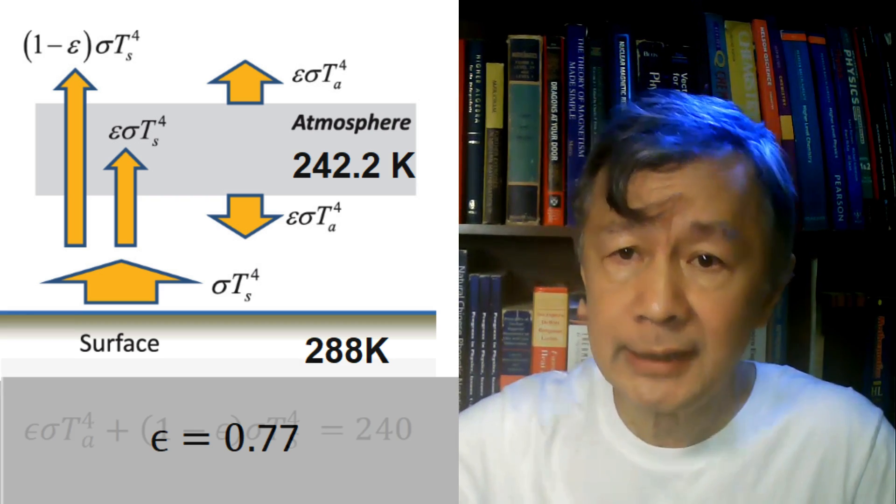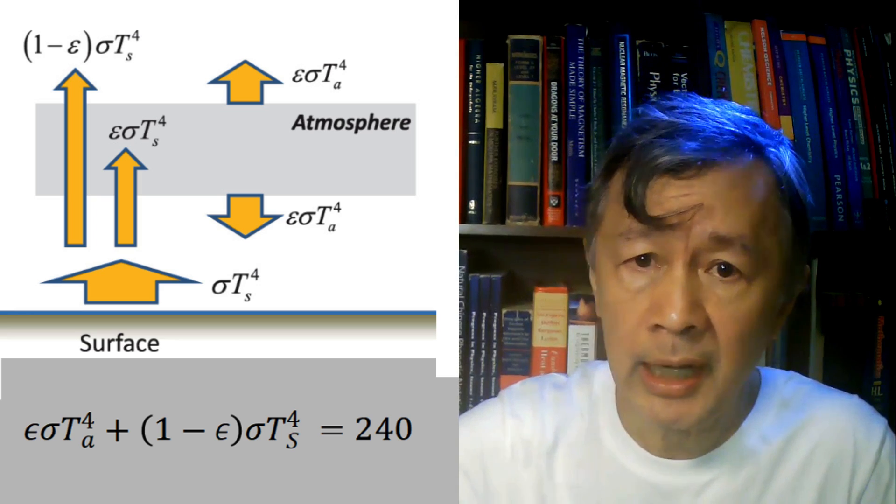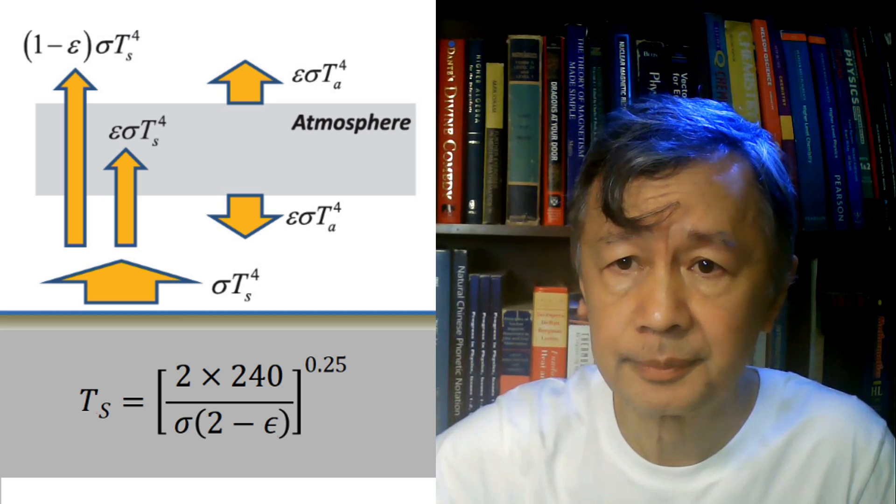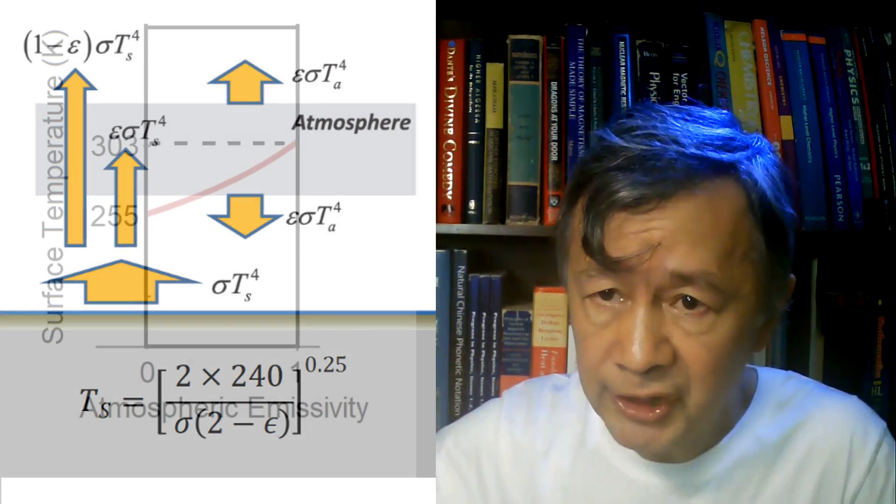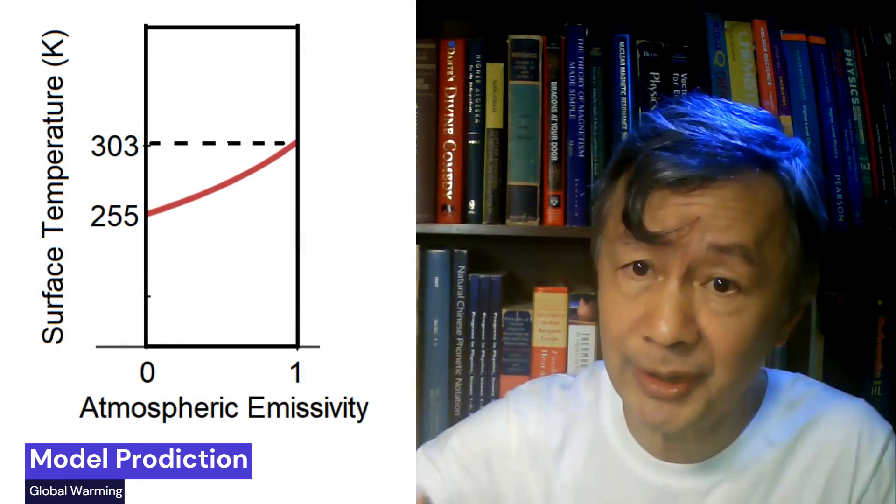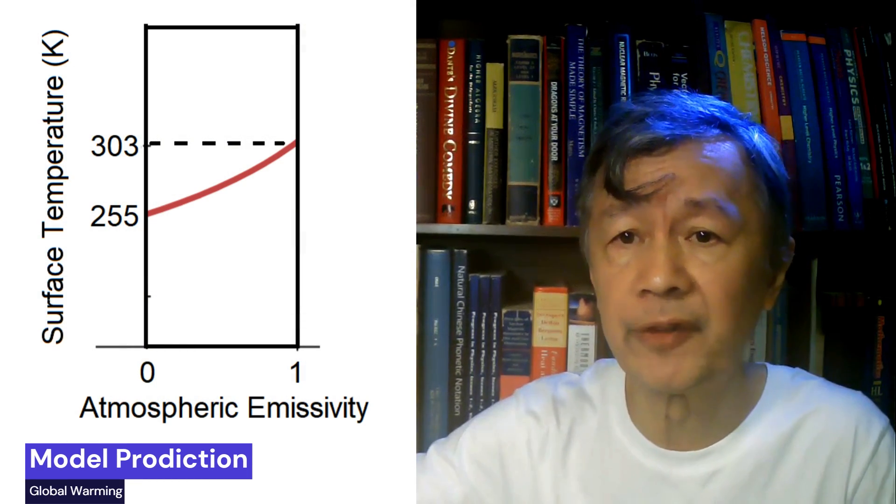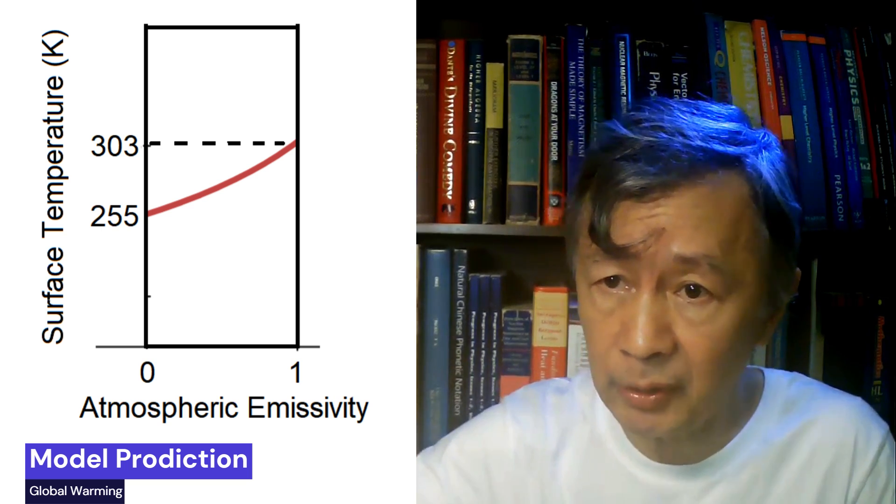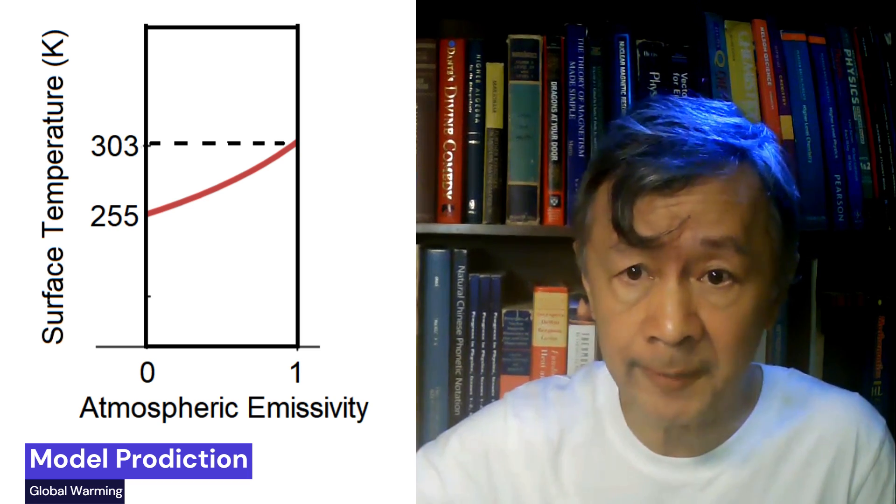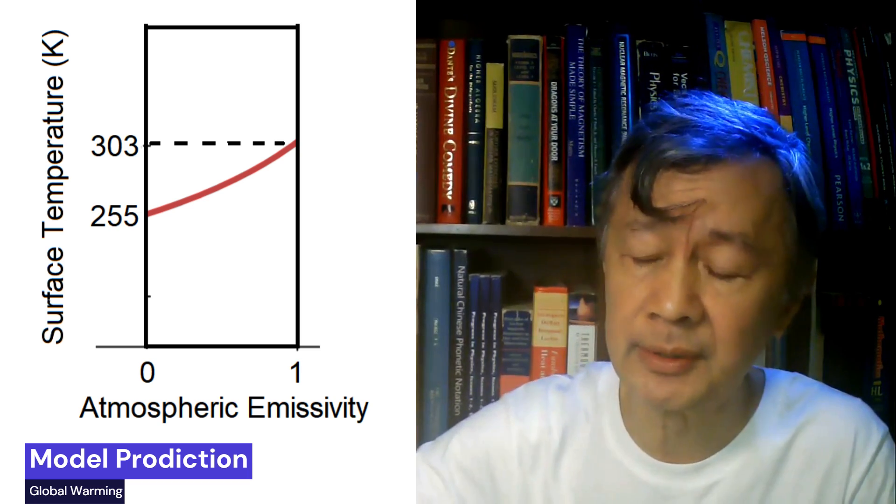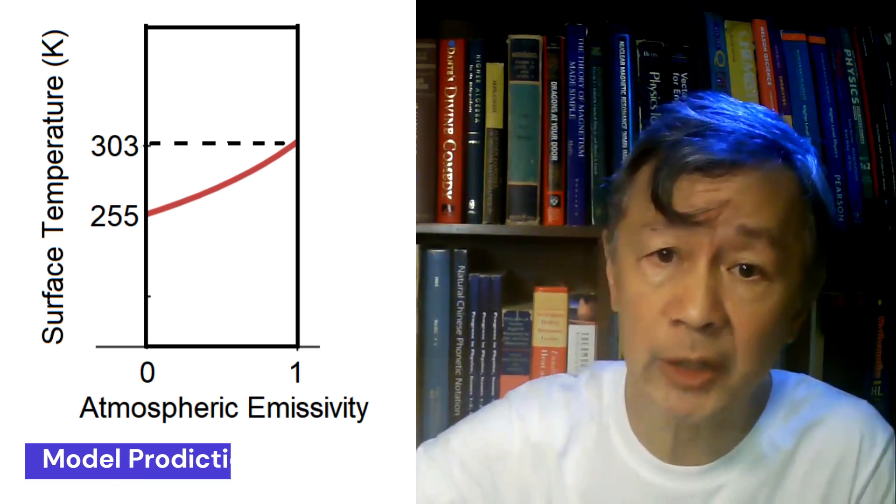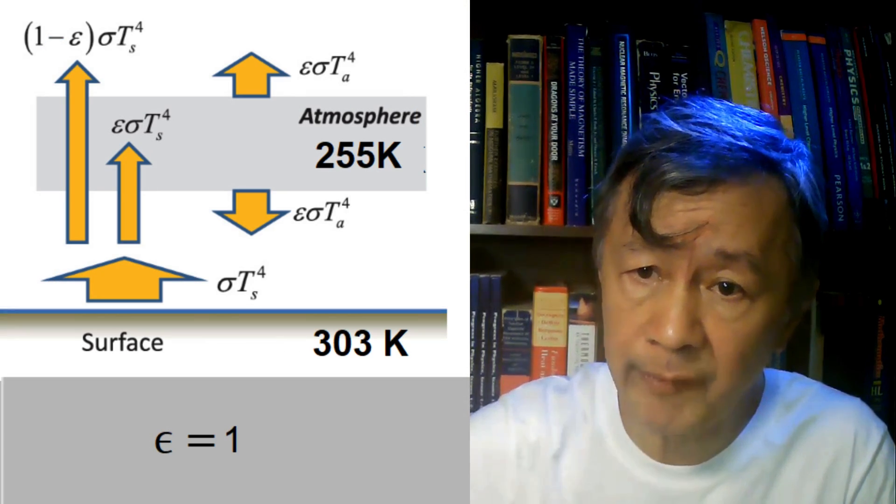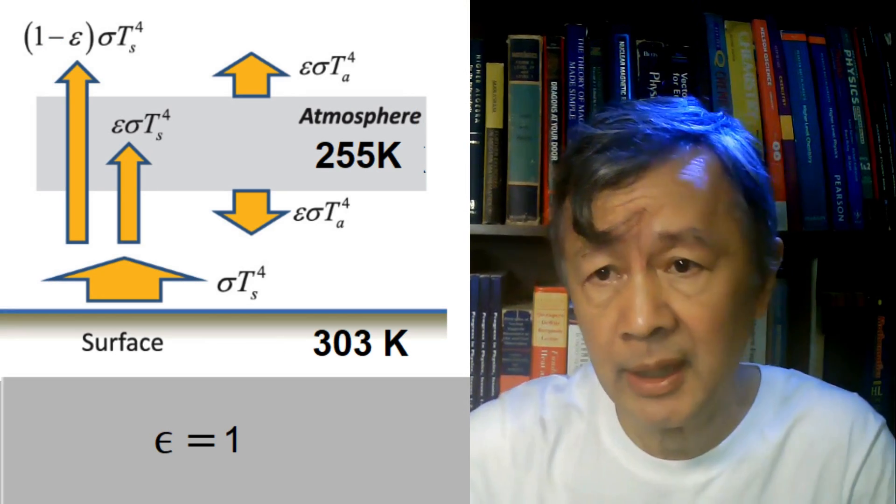Meanwhile, the dependence of the surface temperature on the emissivity can be derived as follows. Notice that this graph shows how the surface temperature increases from 255 Kelvin to 303 Kelvin, as the emissivity epsilon or the absorptivity of the model atmosphere increases from 0 to 100 percent, at which the temperature of the model atmosphere is 255. Sounds reasonable?